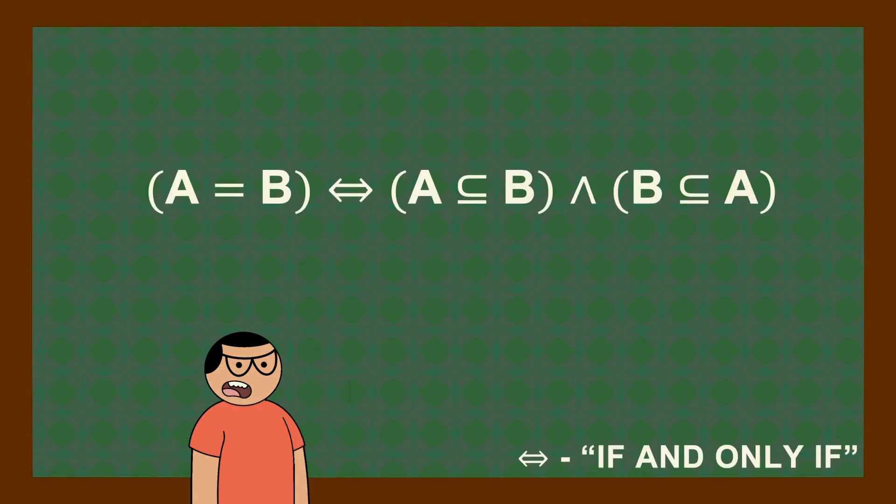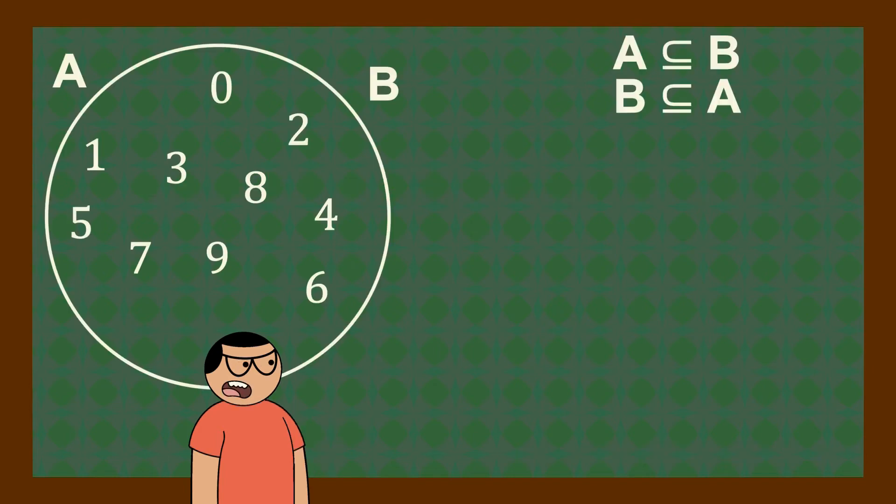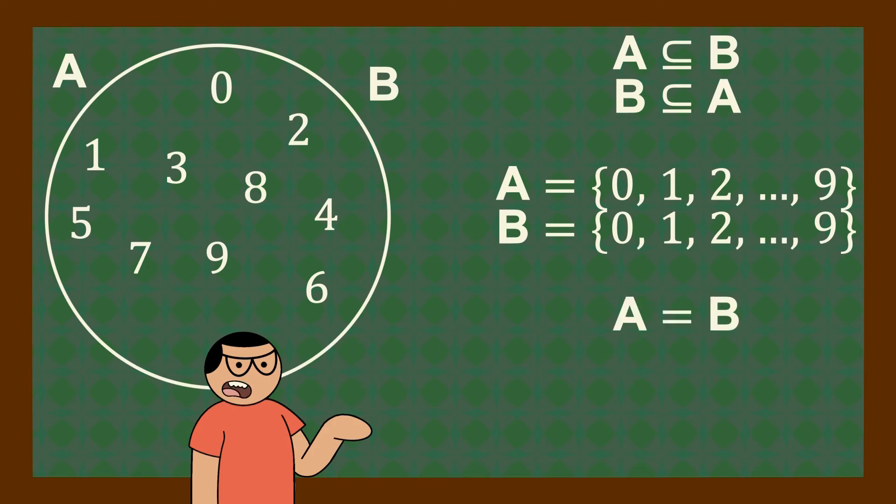Take note that an empty set is a subset of every set and each set is a subset of itself. Two sets are equal if and only if they are subsets of each other. That is to say, if A is a subset of B and B is a subset of A, then any object in A is an object in B and any object in B is an object in A. All the objects in A is the same as all the objects in B. Hence, A and B are equal.